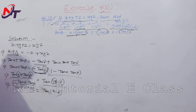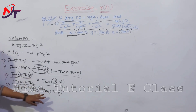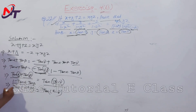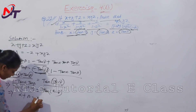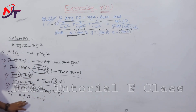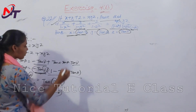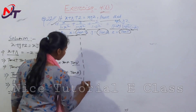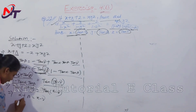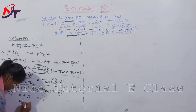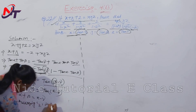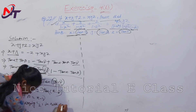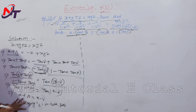From α + β = π − γ, cancelling equal factors on both sides confirms the equality. Then multiplying both sides by 2: 2α + 2β = 2π − 2γ.